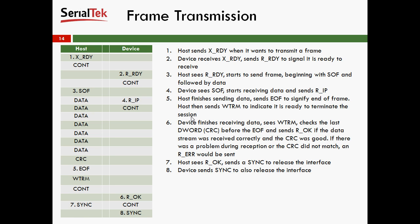For frame transmission, it's a very simple process. One side will send an X-Ready when it's ready to send something. The other side will send an R-Ready, meaning the receiver is ready. You'll see the use of CONTs — X-Ready will send a CONT after maybe a couple of X-Readys just to say it's really ready to send something until it sees the other side is ready to receive. Then the host sends the SOF, followed by a bunch of data, a CRC, and an EOF. As soon as the device sees the SOF, it starts sending RIPs. Once the frame is sent, the host sends WTRMs — waiting for termination — until it sees an R-OK, meaning the receive was OK, and then they send syncs.